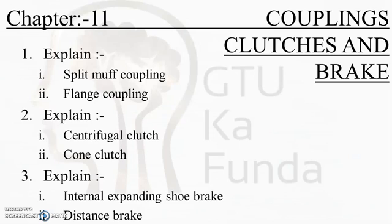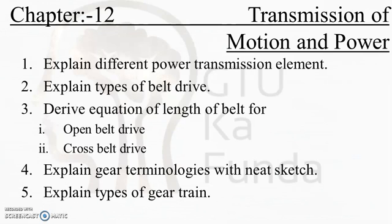Coupling, clutch, and brake topics — including split coupling, muffler coupling, flange coupling, centrifugal clutch, cone clutch, internal expanding shoe brake, and disc brake — will all reappear in the Machine Design subject. For transmission of motion and power, this chapter is easy and can give you good marks. Topics include belt drive, chain drive, open and cross belt drive, types of gears, and gear trains. You can visualize gears, making this chapter very easy to understand.